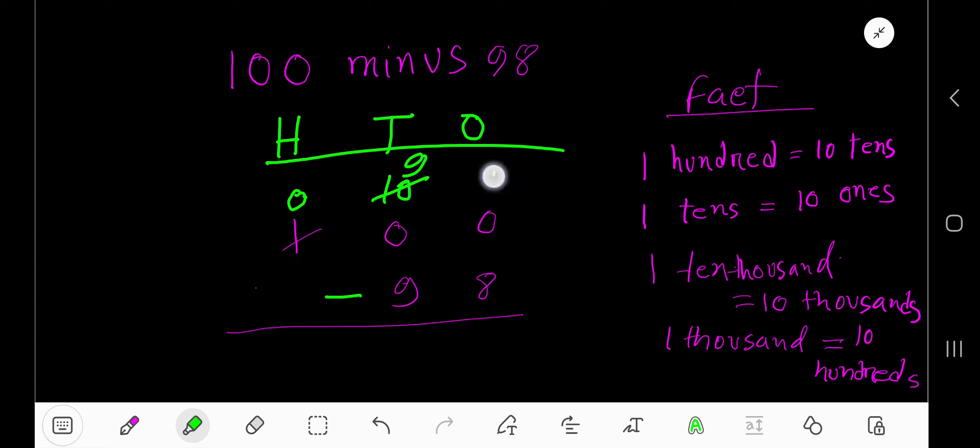So 1 ten becomes 10 ones in the ones column. 10 minus 8 equals 2. 9 minus 9 equals 0. 0.